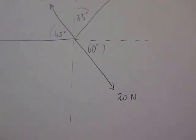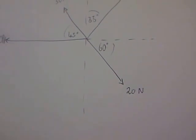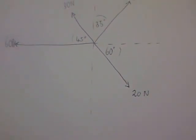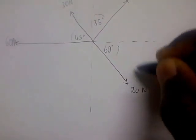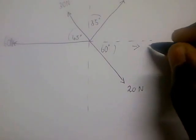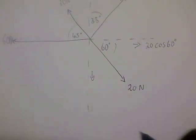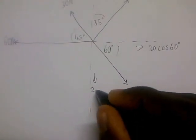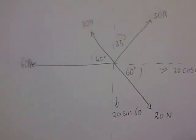Let us look at how to calculate the sum of a horizontal component and a vertical component. The first thing we have to do is to resolve the forces into horizontal and vertical components. For the 20 newton force at an angle of 60 degrees to the horizontal, it points in this direction and it's going to be 20 cos 60 degrees, and pointing downward it's going to be 20 sine 60.